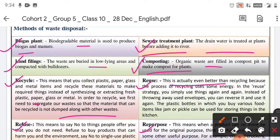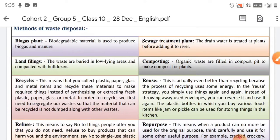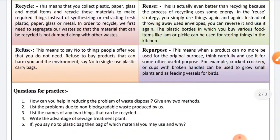Reuse means using things again in different ways. Refuse means saying no to things we know are harmful to our environment and even to ourselves. You can carry a cloth bag from home and avoid taking polythene bags from outside. Saying no to plastics is also one way of contributing.